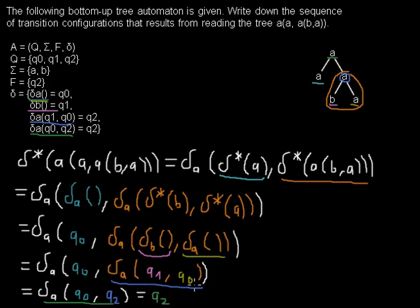We have read the whole tree and are left with Q2. The tree is accepted if the root is a final state, and indeed Q2 is a final state. That means the bottom-up tree automaton accepts this tree.